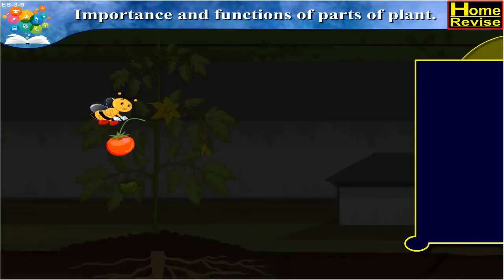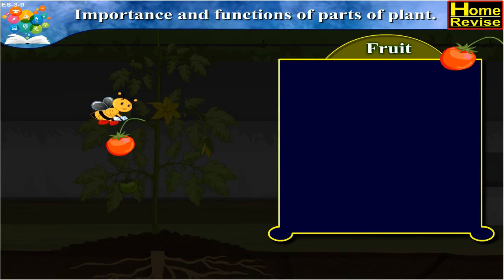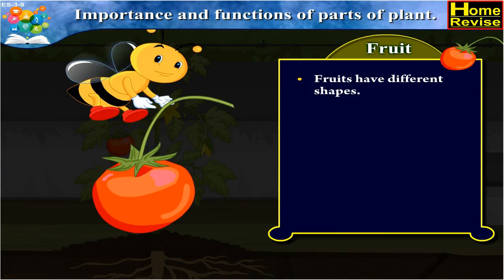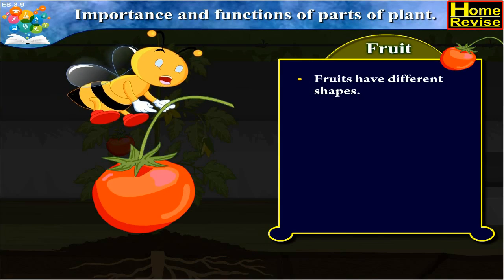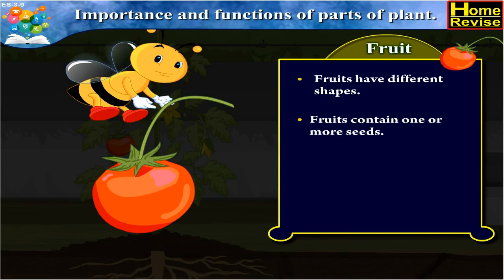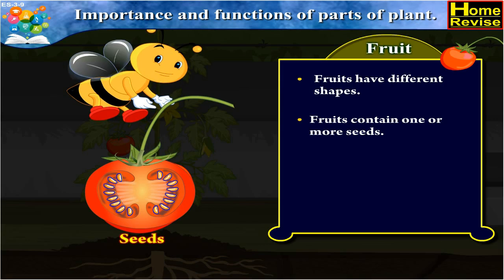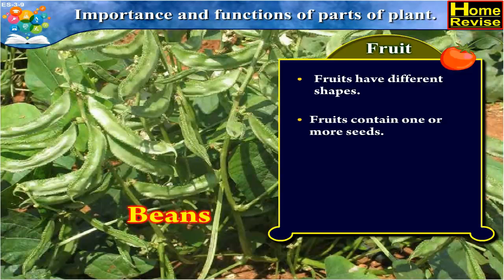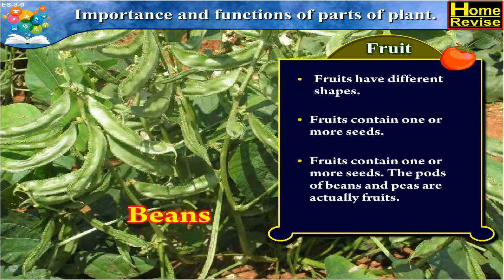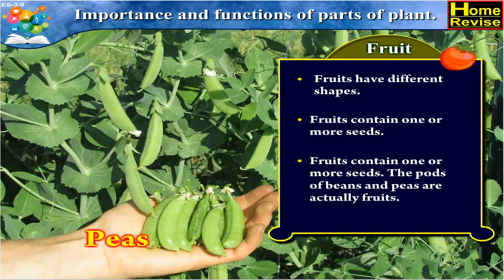The fourth part of the plant is the fruit. Fruits have different shapes. Fruits contain one or more seeds. The pods of beans and peas are actually fruits.